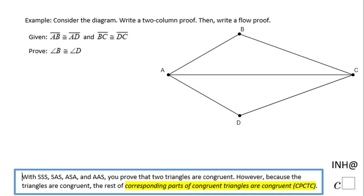Welcome back to iNeedHelpAtC. In this example here we're going to write a two-column proof and then a flow proof about these problems. What is given here is that AB is congruent to AD. I like to mark this on the picture. BC is congruent to DC.